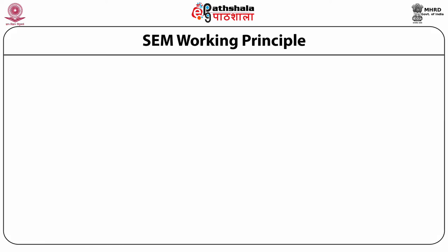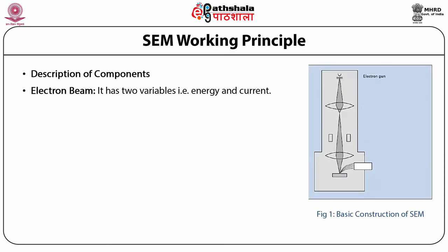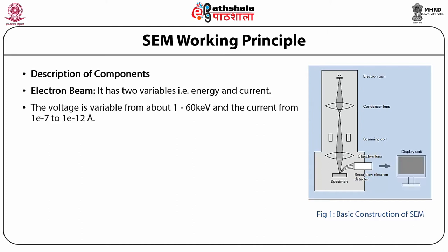Let us now describe each component of SEM. First is the electron beam, which has two variables: energy and current. The voltage is variable from about 1 to 60 kilo electron volts, and the current from 1×10⁻⁷ to 10⁻¹² amperes. These values are specific to the instrument model.